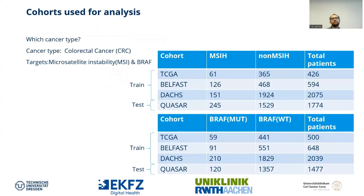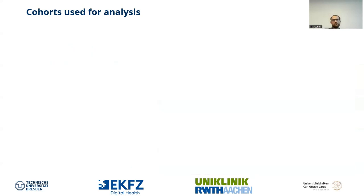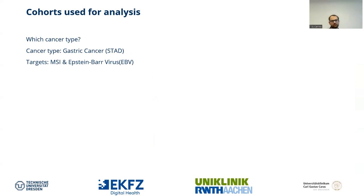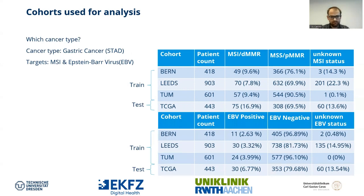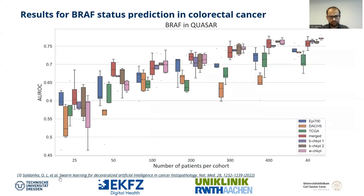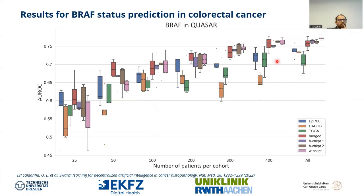Regarding the cohorts: for the colorectal cancer study we had three training cohorts with a specific split between MSI-high and non-MSI patients, and one test cohort. For BRAF mutated and wild type we had specific patient numbers. For the gastric cancer study, the targets were MSI and EBV, with defined train and test cohort splits.